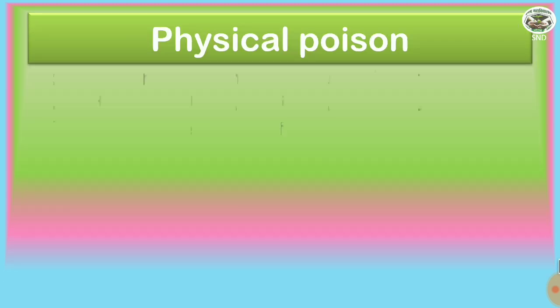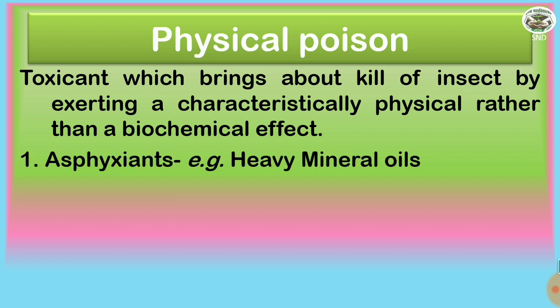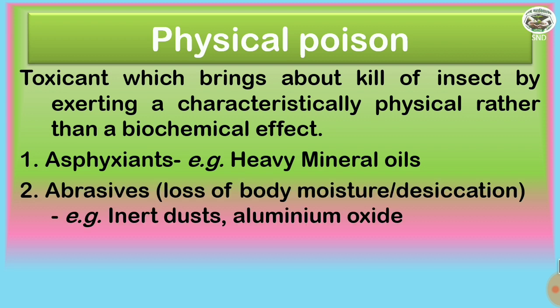First is the physical poison — the toxicant which brings about the kill of insect by exerting a characteristically physical rather than a biochemical effect. The asphyxians, for example, heavy mineral oils. The abrasives which cause injury to the body of the insect and lead to the loss of body moisture or desiccation of insect body. Examples are inert dust, aluminum oxide.